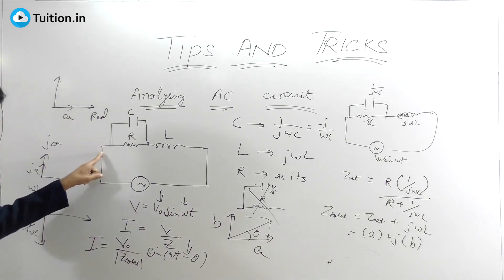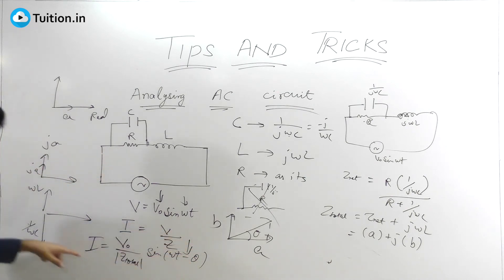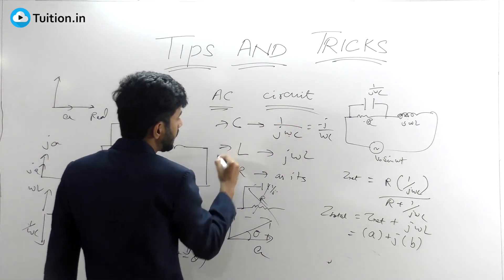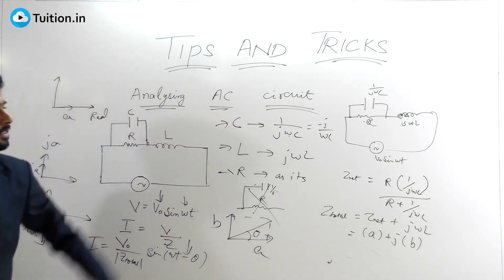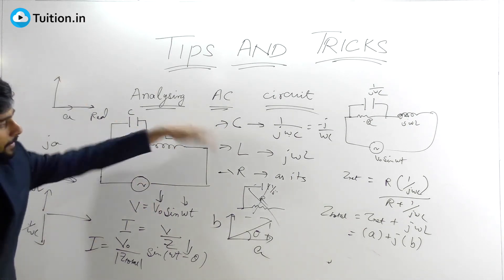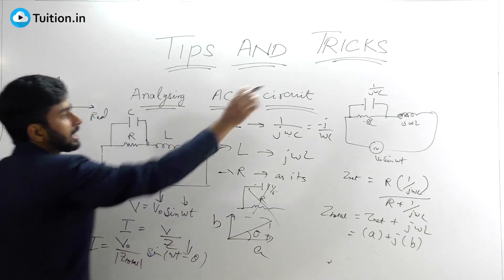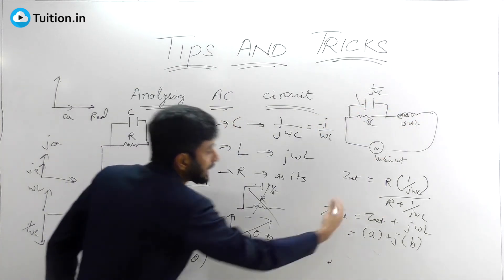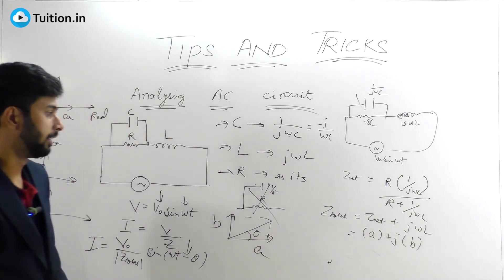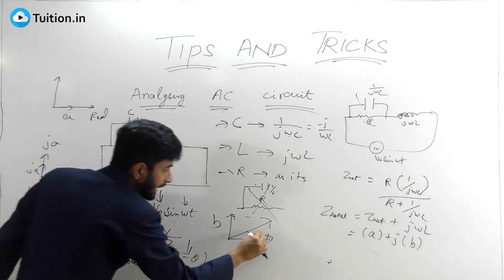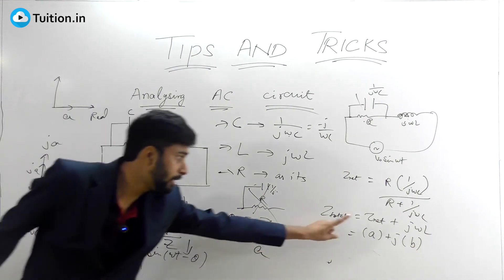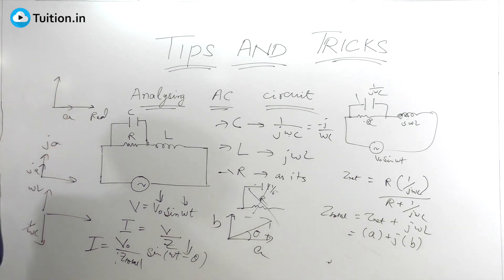Our goal was to get current as an alternating function, and we have done that successfully. First, find the impedance using these tricks: wherever you see C in the circuit, replace it with 1/jωC; wherever you see L, replace it with jωL; keep R as it is. Treat them as impedances — parallel and series combinations as applicable. Get the impedance as a complex number, find the angle using tan⁻¹(B/A), and use that angle with a minus sign to get the current, where peak current is V₀ divided by the magnitude of the complex impedance. That's how you analyze any AC circuit.